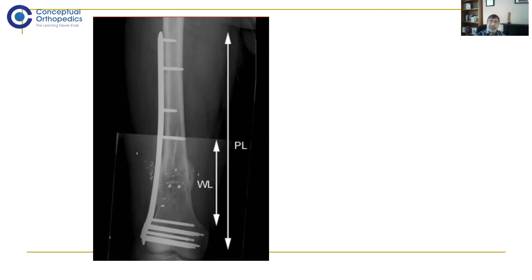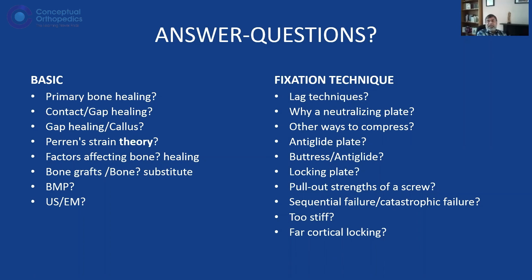We have already done two previous lectures. The last one covered bone healing — the difference between primary and secondary healing, contact healing and gap healing, and the interfragmentary strain theory. If strain at the fracture site is minimal, you can achieve primary healing; medium strain between two and ten percent gives secondary healing; but too much movement leads to non-union. That was the biology of fracture healing.